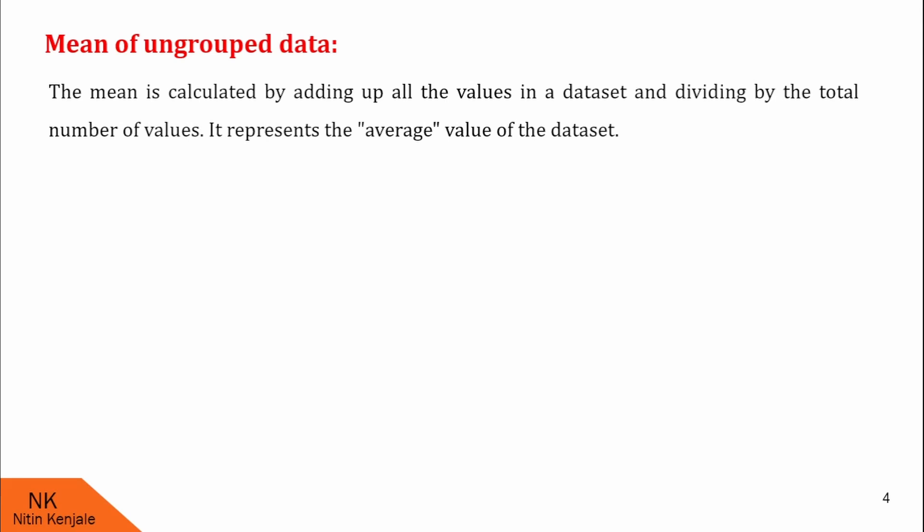Mean is calculated by adding up all the values in the dataset and dividing by the total number of values. It represents the average value of the dataset. So the formula for mean of ungrouped data becomes: sum of all the data points divided by number of data points.